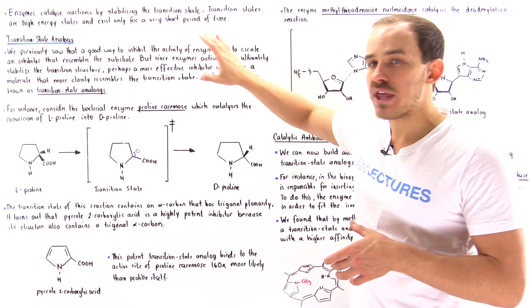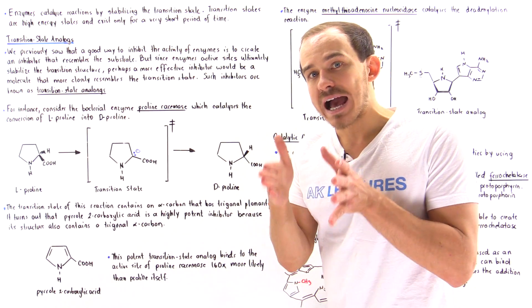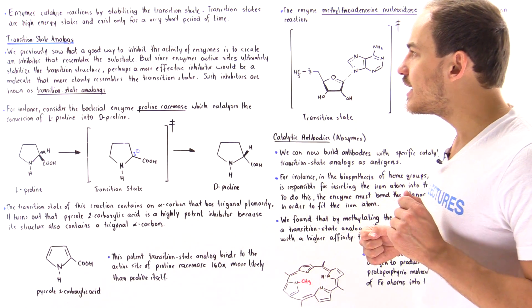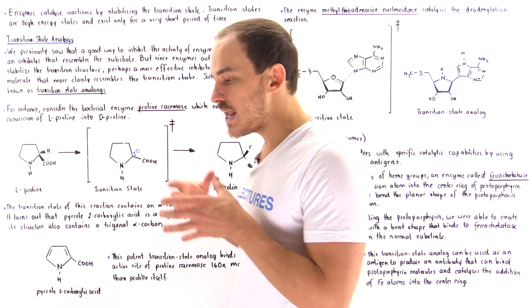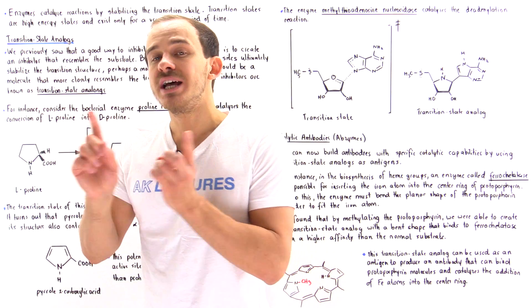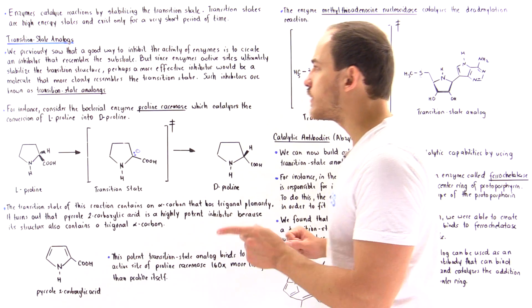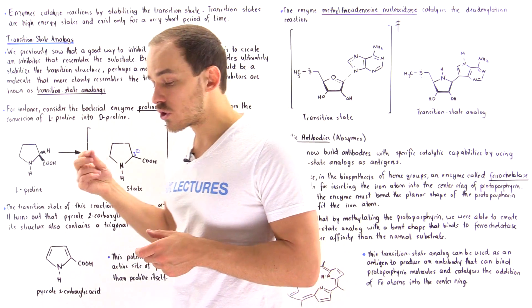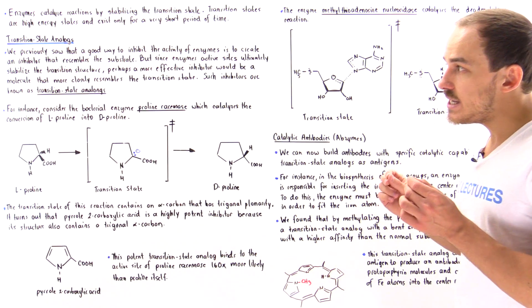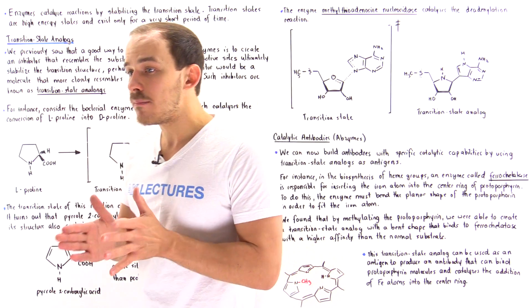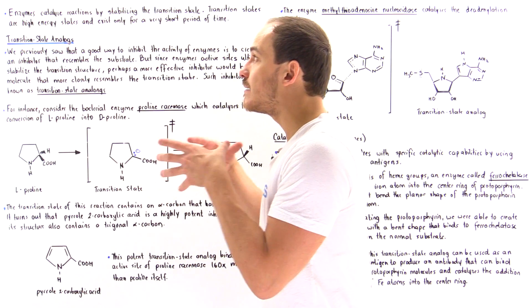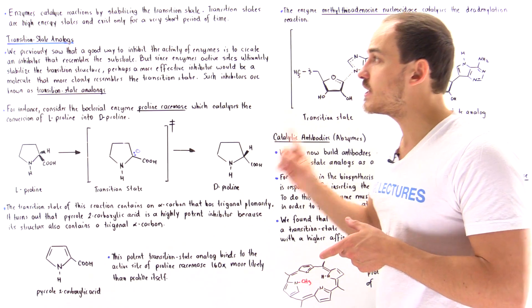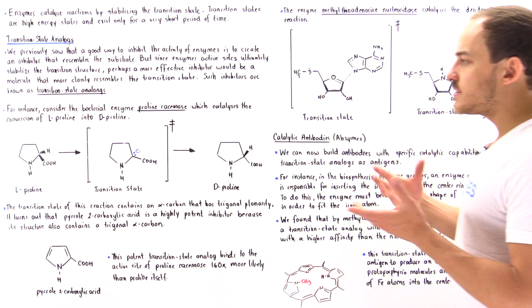Because enzyme active sites essentially stabilize the structure of the transition state, that implies that a much more effective inhibitor would be one that resembles not the structure of the substrate, but rather the structure of the transition state. These types of inhibitors are known as transition state analogs, or transition state inhibitors. Transition state analogs are molecules that resemble the structure of the transition state, and because enzymes ultimately stabilize the transition state, these are very potent, very effective inhibitors.